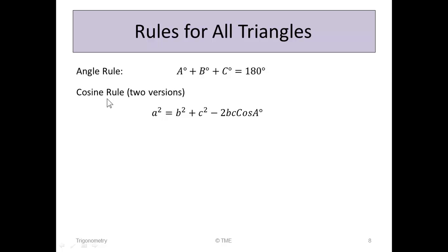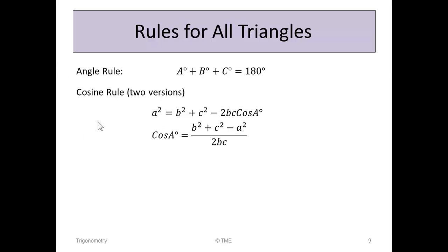The next rule is the cosine rule, which comes in two versions. The first version states that A squared equals B squared plus C squared minus 2BC cos A. In other words, if you know two sides and the angle between them — the angle they share in common — you can identify the length of the third side. Another version is obtained by rearranging: cos A equals B squared plus C squared minus A squared, all over 2BC.